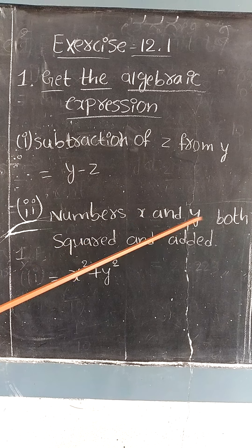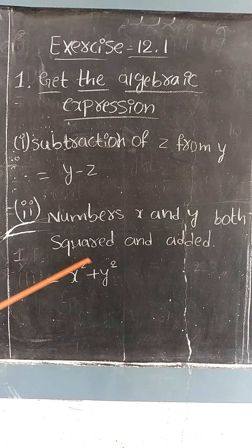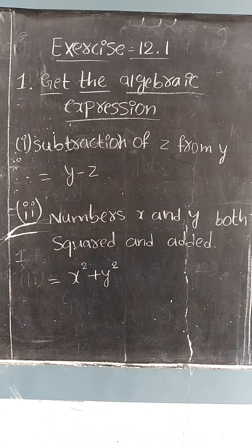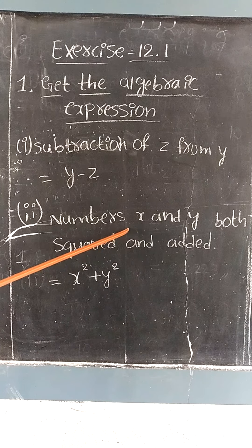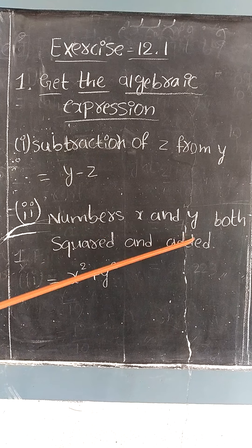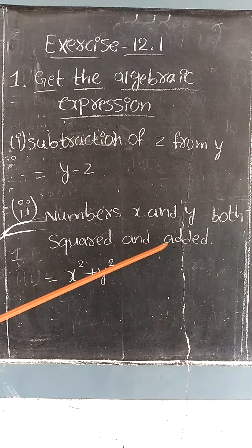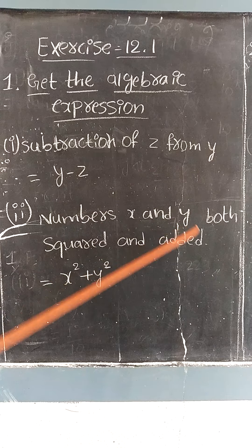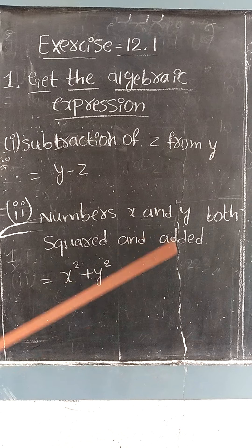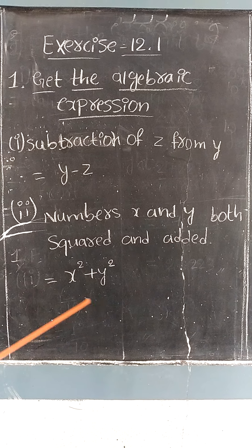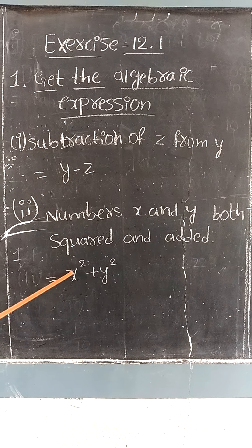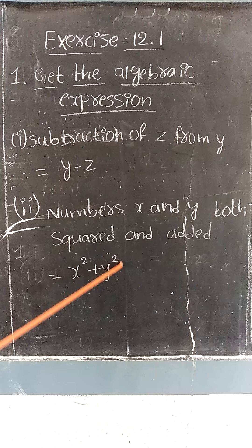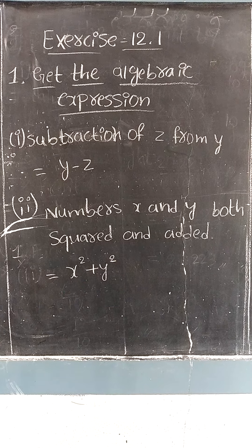The second one: numbers x and y both squared and added. So we take x and y, first we square them — x squared and y squared — then we add them. The answer is x squared plus y squared.